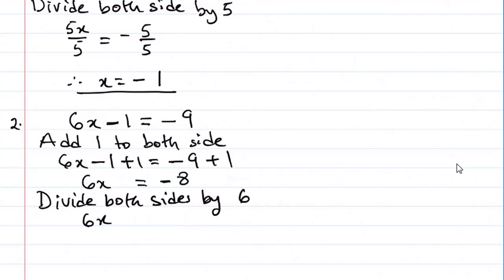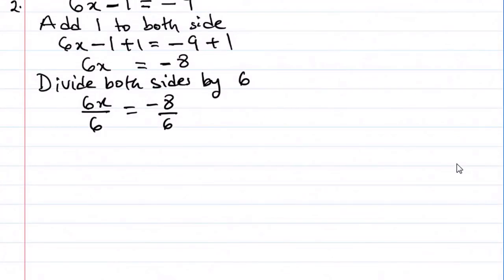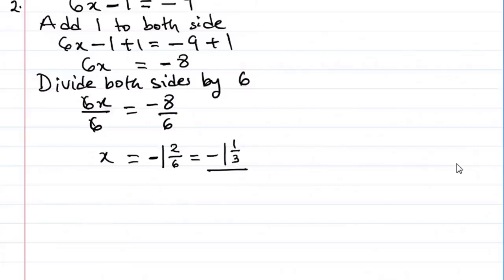This gives us 6x over 6 equals to minus 8 over 6. The 6 here will cancel out, giving us the value of x. We are left with minus 8 over 6 — 6 goes into 8 once and we are left with 2, giving us minus 1 and 1 over 3. That is our answer.